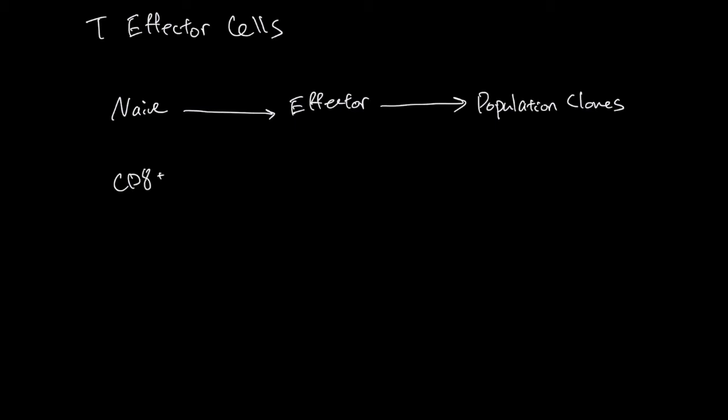Hi, this is Quat. In this video I want to tell you about T effector cells. A naive T cell gets stimulation and becomes an effector T cell, and the effector T cell multiplies to create a population. CD8 positive naive T cell becomes cytotoxic T cell, and the cytotoxic T cell can kill self cells.